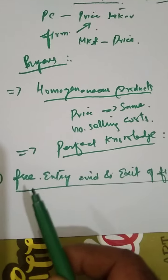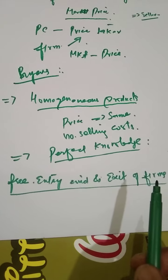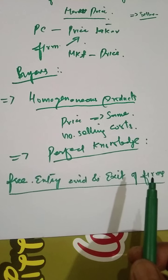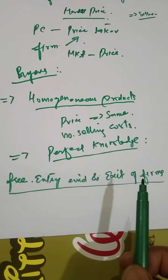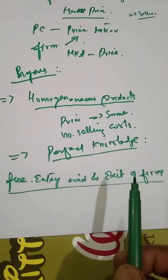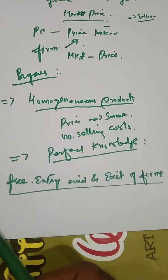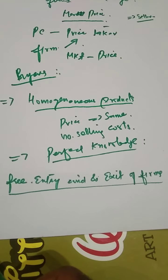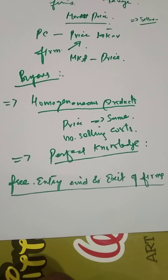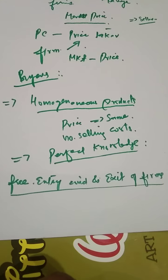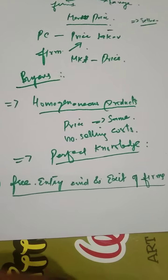Another feature of perfect competition is free entry and exit of firms. There are no barriers and no legal restrictions on the entry of new firms into the market. A firm can enter and leave any industry it likes — there is no legal restriction on entry or exit.